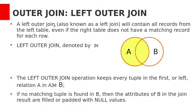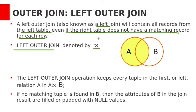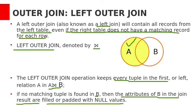Left outer join, also known as left join, contains all records from the left table even if the right table does not have a matching record for each row. Left outer join is denoted with this symbol in relational algebra. It keeps every tuple in the first (left) relation A. In an A left outer join B result, if no matching tuple is found in B, then the attributes of B in the join result are filled with null values.